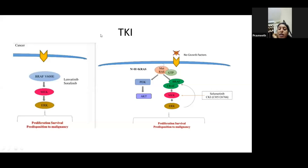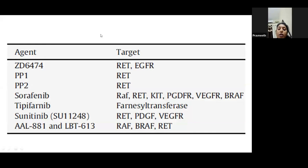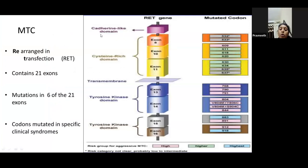Tyrosine kinase inhibitors act along the signaling pathways described — specifically along the MEK pathway. They stop the activation of the pathway. Sorafenib acts on RET, PDGFR, and VEGFR. Sunitinib, also commonly used, acts on RET, PDGFR, and VEGFR.